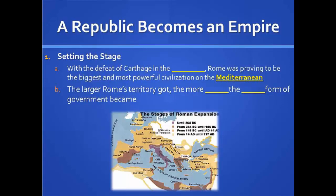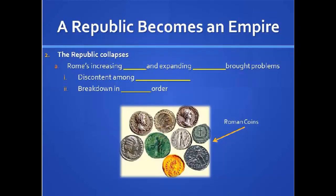A republic becomes an empire — setting the stage. With the defeat of Carthage and the Punic Wars, Rome was proving to be the biggest and most powerful civilization on the Mediterranean. The larger Rome's territory got, the more unstable the republic form of government became. As the territory got bigger, it got harder and harder to rule, with all these different provinces away from Rome, and the further they got, the bigger problems they had. This is typical of a lot of empires and countries. In the end, the republic collapses.